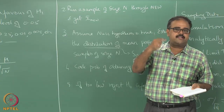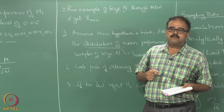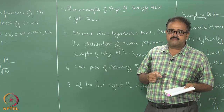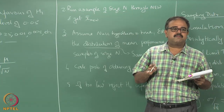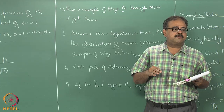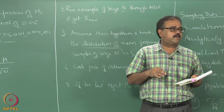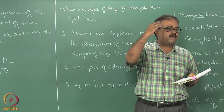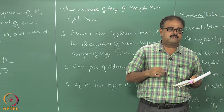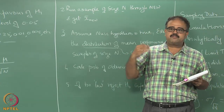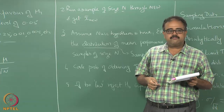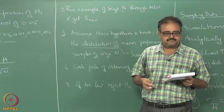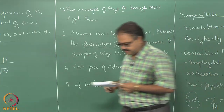In the z-test you compare with the z-table; in the t-test you use the t-table, but you have to be careful about which row in the t-table to use. If you have n samples, you look up the row corresponding to n minus 1, because n samples give you n minus 1 degrees of freedom.